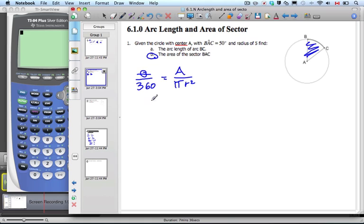That's just substituting in your values. So we go 50 over 360 equals A over pi 5 squared. Get rid of the zeros, cross multiply. 36A equals, let's see, 25 times 5, 125 pi.